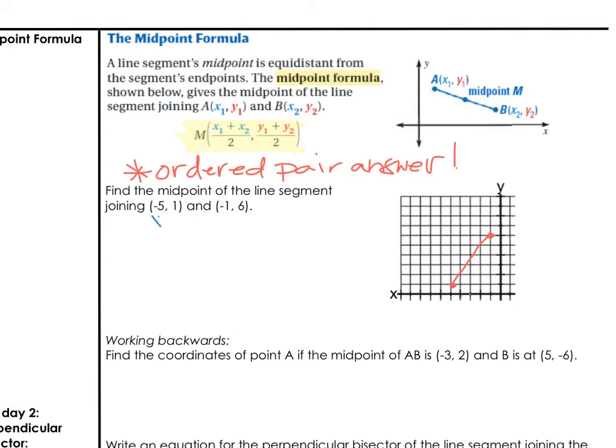If we have x1, y1, get that 1 in there, x2, y2, you literally just add the x's together, divide by 2, add the y's. So midpoint formula, it's kind of a big ordered pair formula. x1 plus x2, -5 plus -1, all over 2. y1 plus y2, 1 plus 6 over 2. And then we simplify.